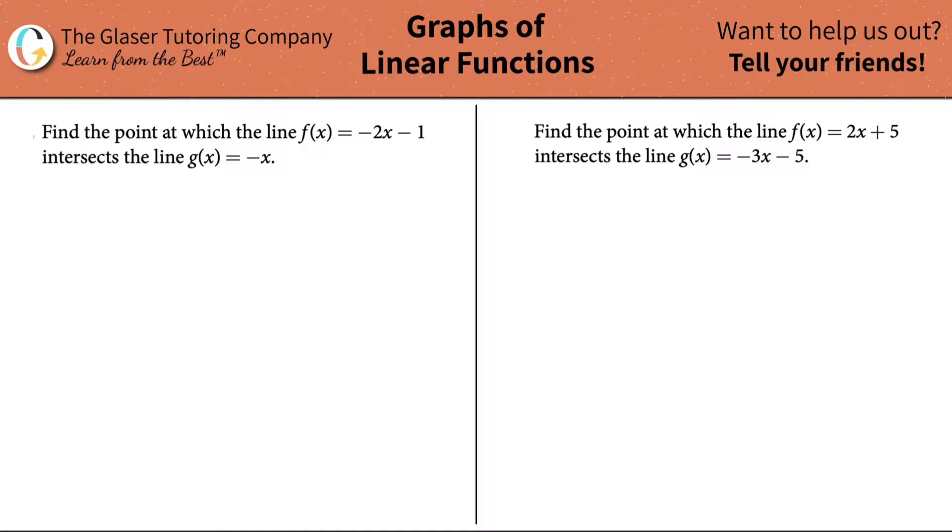Find the point at which the line f(x) equals negative 2x minus 1 intersects the line g(x) equals negative x.